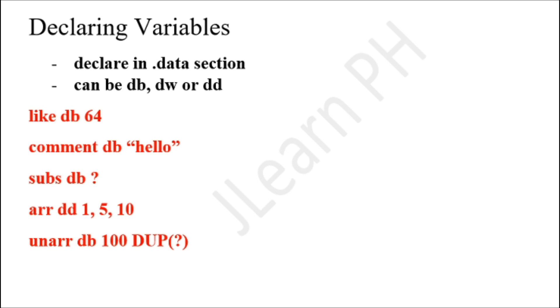Lastly, you can also declare an uninitialized array. 'unarr db 100 dup(?)' - this basically declares 100 uninitialized bytes starting at the location unarr.